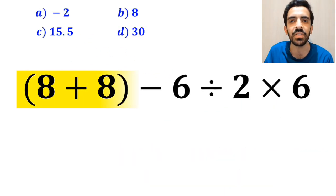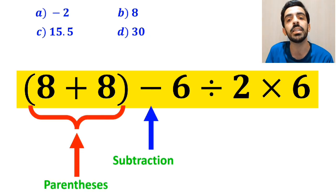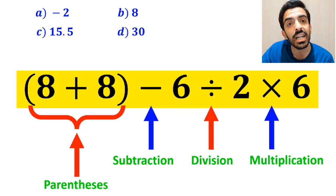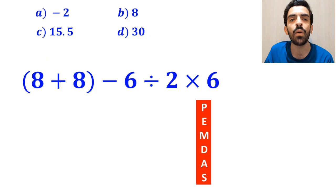Now, let me show you how to solve this expression properly. As you can see in the image, in this expression, first we have a parenthesis, then a subtraction sign, followed by a division, and finally a multiplication. To solve this question, we need to follow the PEMDAS rule step-by-step.